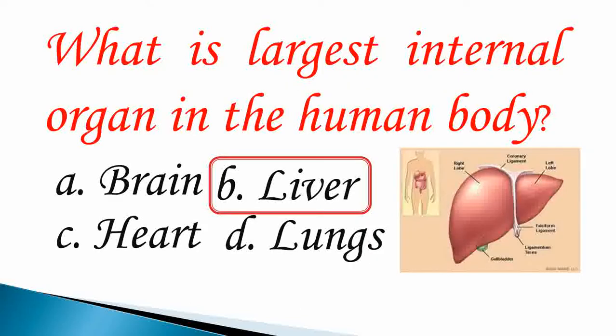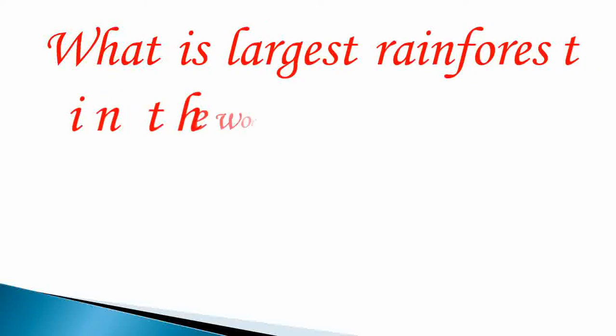What is largest internal organ in the human body? Option A: Brain. Option B: Liver. Option C: Heart. Option D: Lungs. Our answer is B, Liver.